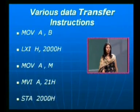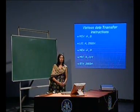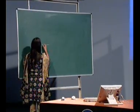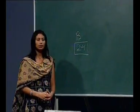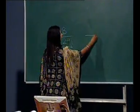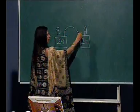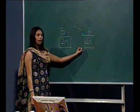Various data transfer instructions are: the first one is MOV B,A. In this instruction, the data from register B will be moved to register A. For example, if the contents of register B are 24, after the execution of this instruction, the data from register B will be transferred to register A, and the contents in register A will be 24.